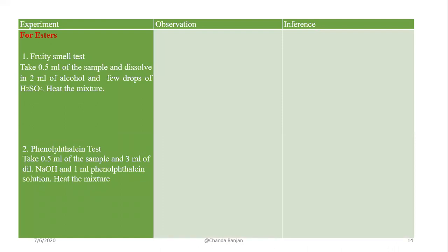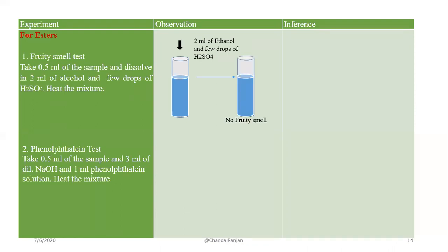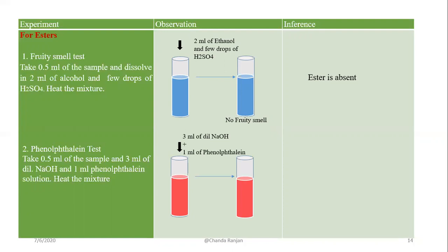We will first test for esters. We take the compound, add 2 ml of ethanol and a few drops of sulfuric acid — no fruity smell is observed, indicating ester is absent. We have another test for esters: the phenolphthalein test, in which we add 3 ml of dilute NaOH and 1 ml of phenolphthalein. The color of the phenolphthalein was not discharged, confirming ester is absent.